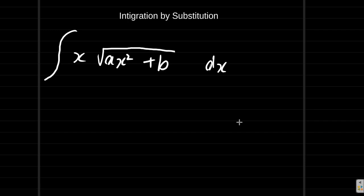If you differentiate ax squared plus b, what do you get? You're going to get 2ax. So this seems to be an integral of the form integral of f prime x f of x dx.